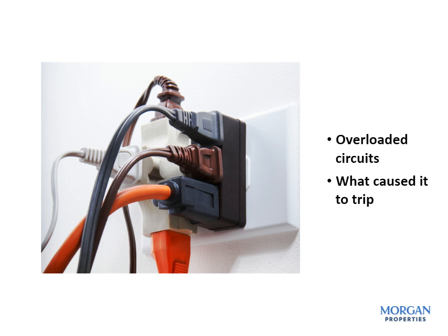Circuit breaker trips are most commonly caused by overloaded circuits. This usually happens when running too many appliances at the same time. Like a portable heater, a hairdryer, or an air conditioner — these may cause a higher amount of electricity through the breaker than it's designed to handle. When this happens, the circuit breaker's automatic safety setting causes it to shut itself down, or trip.